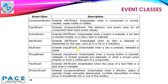Key Event extends Input Event and is instantiated when a key is pressed, released, or typed. Mouse Event extends Input Event and is instantiated when a mouse button is pressed, released, or clicked, or when a mouse cursor enters or exits a visible part of a component. Text Event extends AWT Event and is instantiated when the value of a text field or a text area is changed. Window Event extends Component Event and is instantiated when a window object is opened, closed, activated, deactivated, iconified, de-iconified, or when focus is transferred in or out of the window.